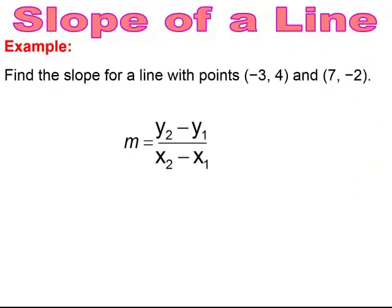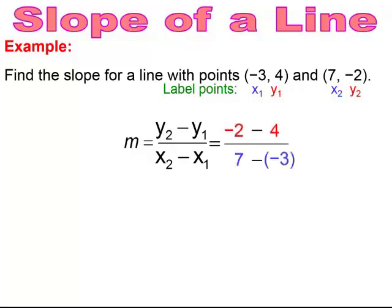When we're trying to find the slope of the line and we're given two points, we're going to use the slope formula. What I like to do is label my x1, y1 and my x2, y2 so I don't reuse a value. I take that information and substitute it into the formula and evaluate. Always be careful because the formula is always minus — y2 minus y1 over x2 minus x1.